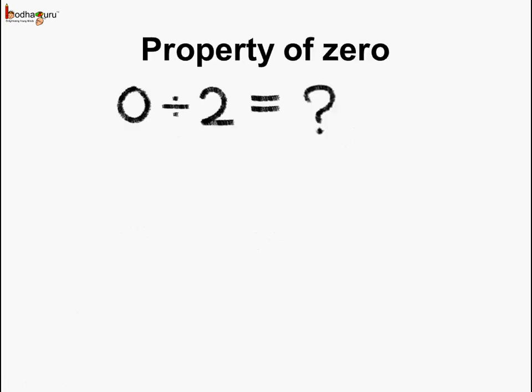Now let us see what happens with 0. What is 0 divided by 2 equal to? Suppose you have 0 chocolates and you want to share it with your friend. What does this mean? It means you need to divide 0 in 2 parts. This means again the 2 parts are 0. So 0 divided by 2 is equal to 0.